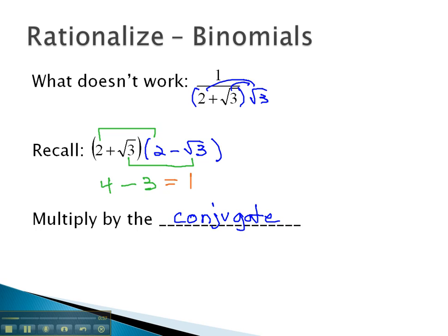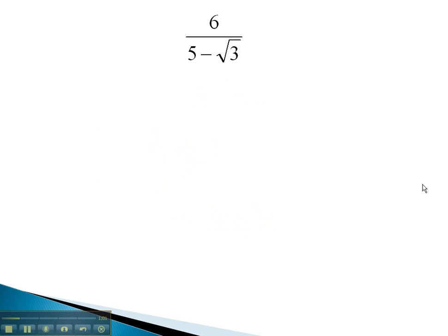Let's take a look at some examples where we multiply by the conjugate in order to clear the radical in the binomial denominator. Here again, we've got a binomial 5-√3, and so we will multiply by the conjugate, which is 5+√3, on the numerator and the denominator.